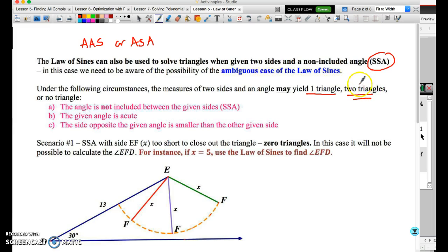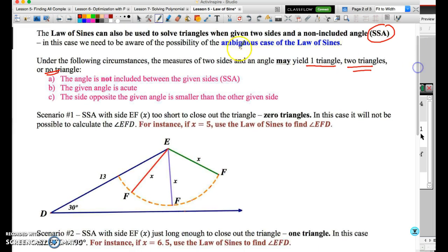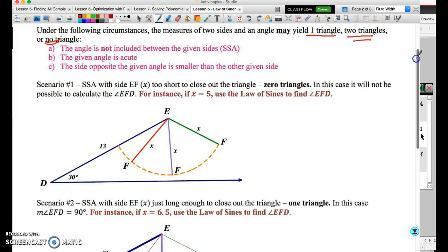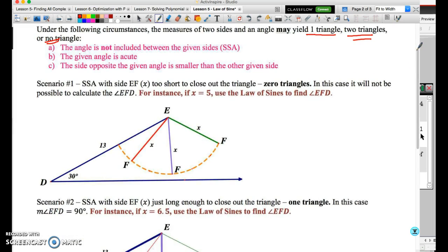Under these circumstances, SSA, it's possible that we get a single triangle and we use the law of sines in the normal way to calculate a missing side or angle. It's also possible, though, that with the same information, we are able to produce two triangles. And the third possibility is that there is no triangle possible at all.